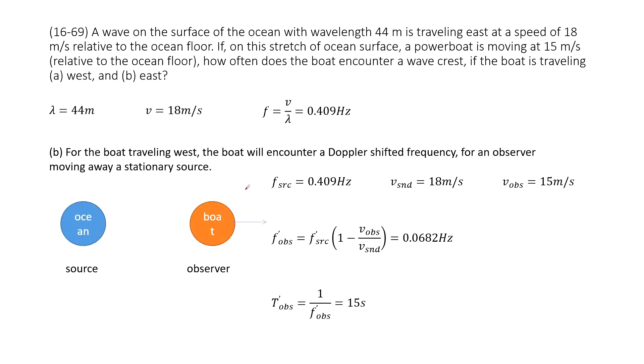The second case we can see is this boat moves to the east. So it moves to the east. That is a moving observer away from stationary source. Agree?